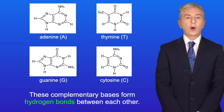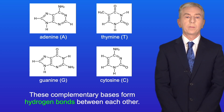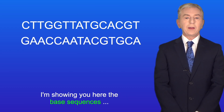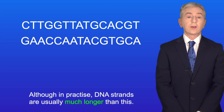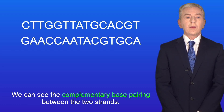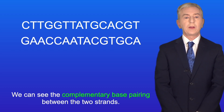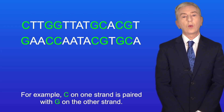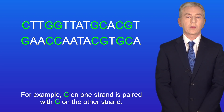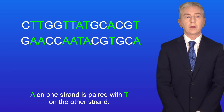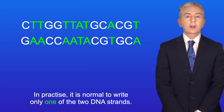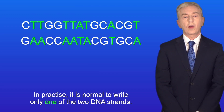These complementary bases form hydrogen bonds between each other. I'm showing you here the base sequences of two complementary strands of DNA, although in practice DNA strands are usually much longer than this. We can see the complementary base pairing between the two strands — for example, C on one strand is paired with G on the other strand, and A on one strand is paired with T on the other strand. In practice it's normal to write only one of the two DNA strands.